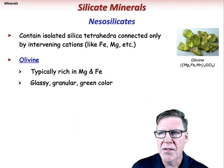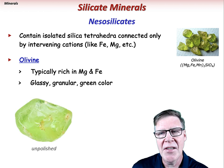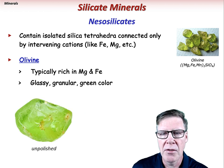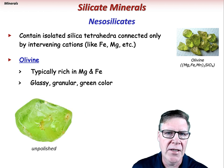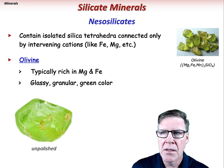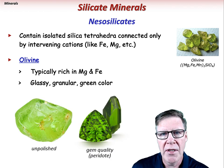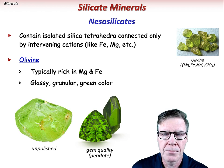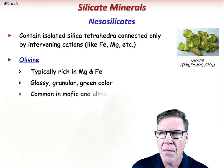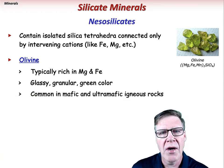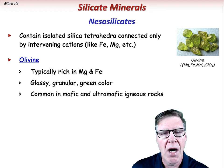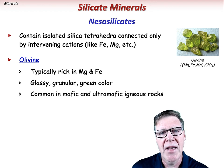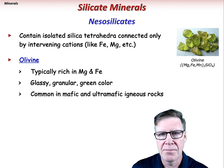Olivine is typically glassy, granular, and green in color. Gem-quality olivine is called peridot. Olivine is an important rock-forming mineral and is common in mafic and ultramafic igneous rocks.